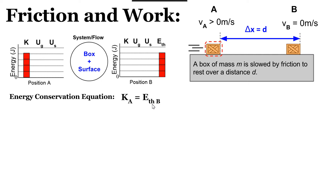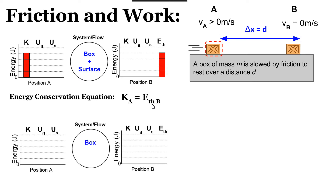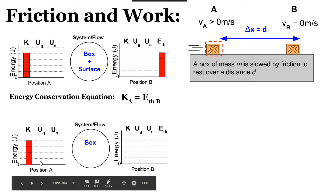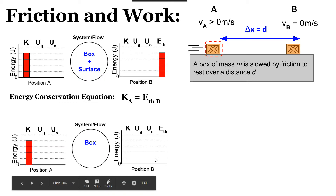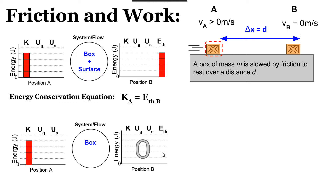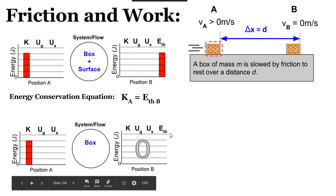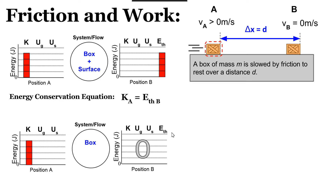What if we change our system definition so that the system is just the box? In the beginning, the box has energy stored in the kinetic energy account. But let's assume the box doesn't heat up while it slows down, and there's no thermal energy stored in the box at the end. So the box system has no energy in any account — no kinetic energy, no gravitational potential energy, no spring potential energy, no thermal energy. If the box had energy at the start and none at the end, energy must have been transferred out of the system.